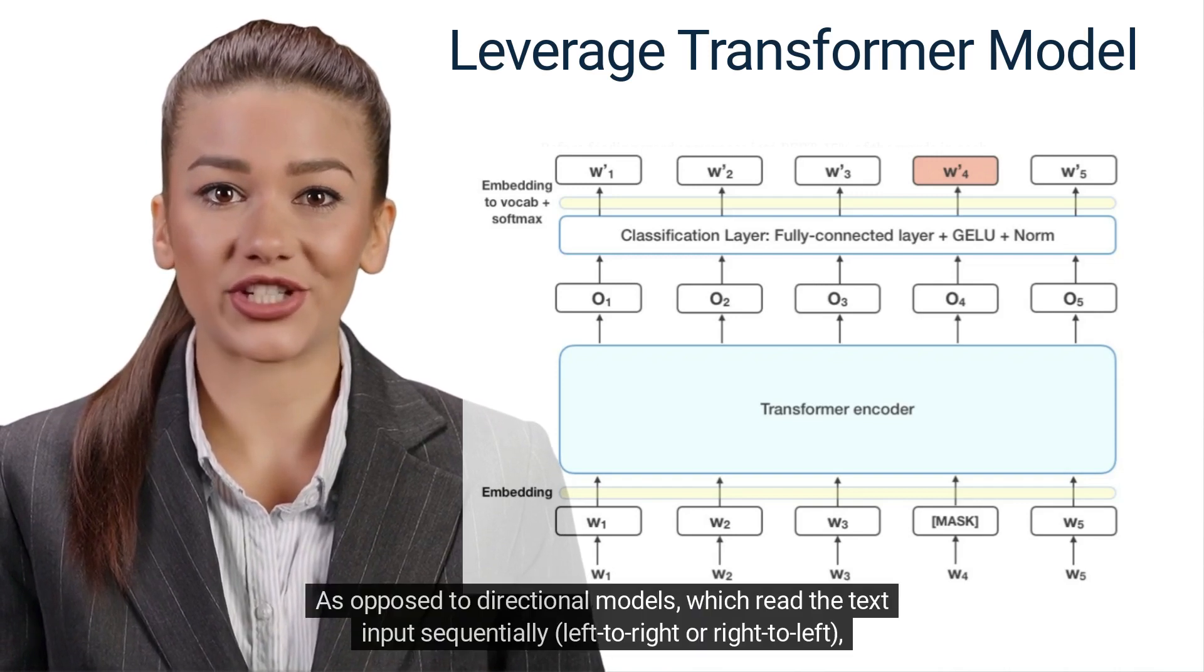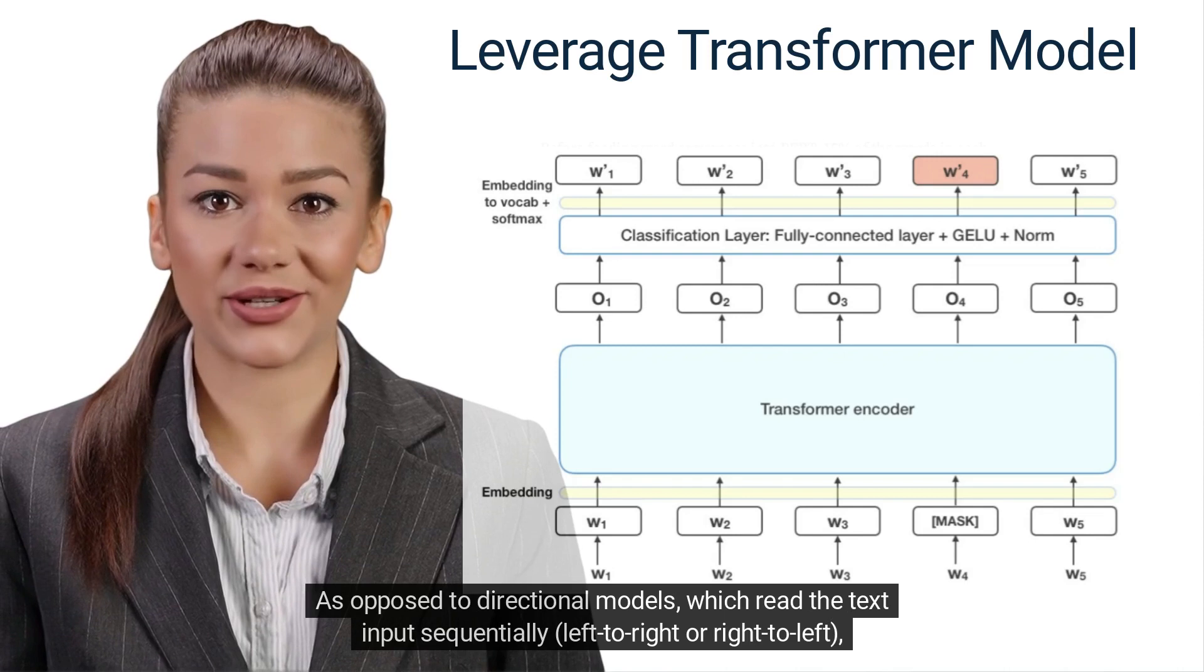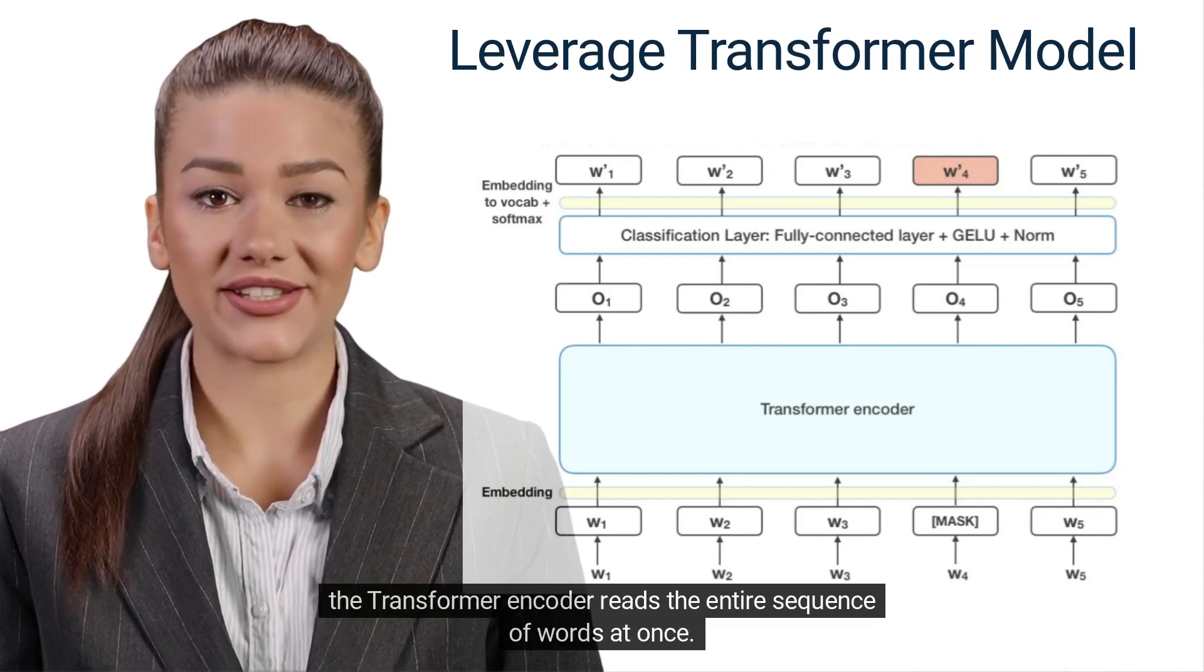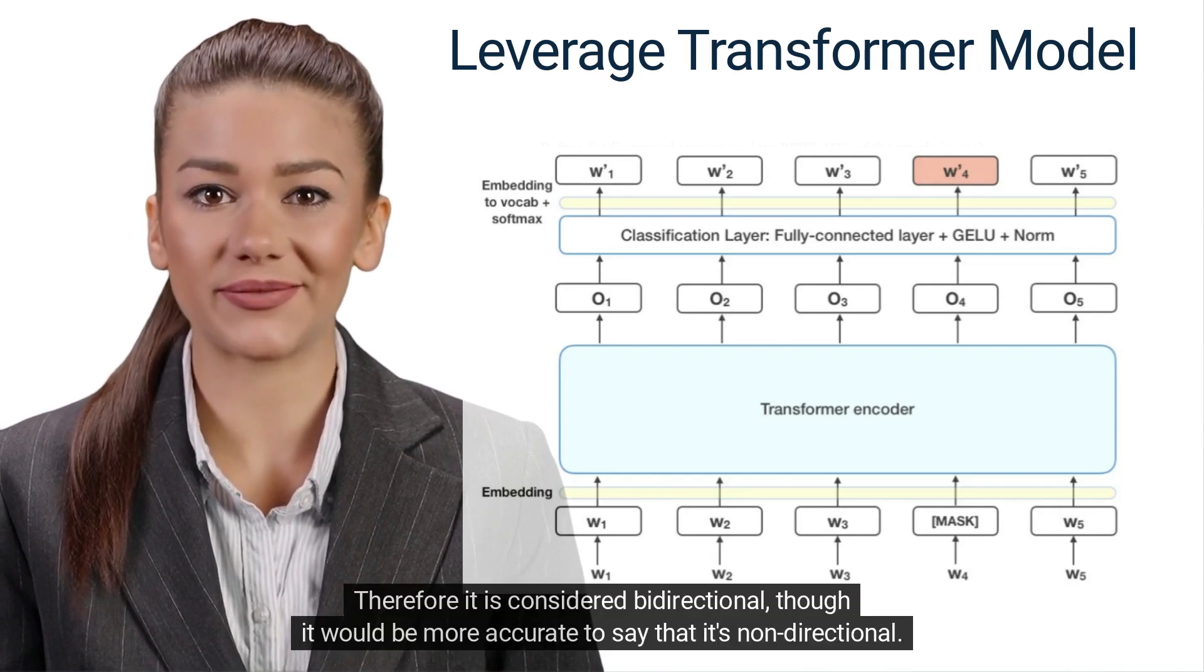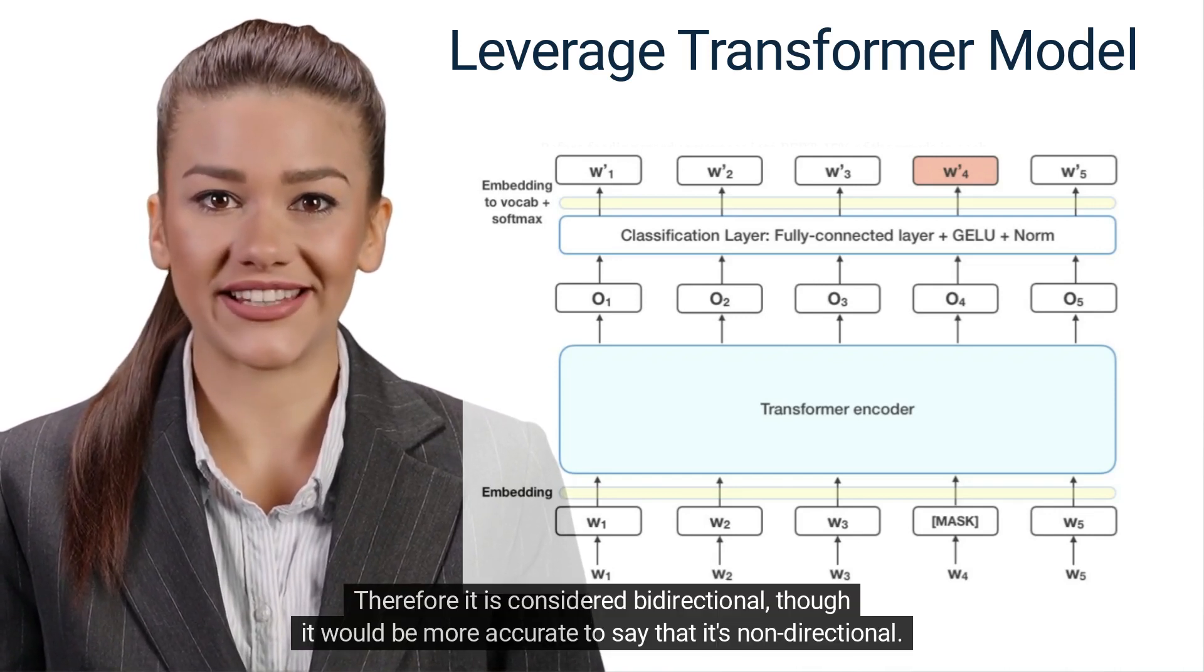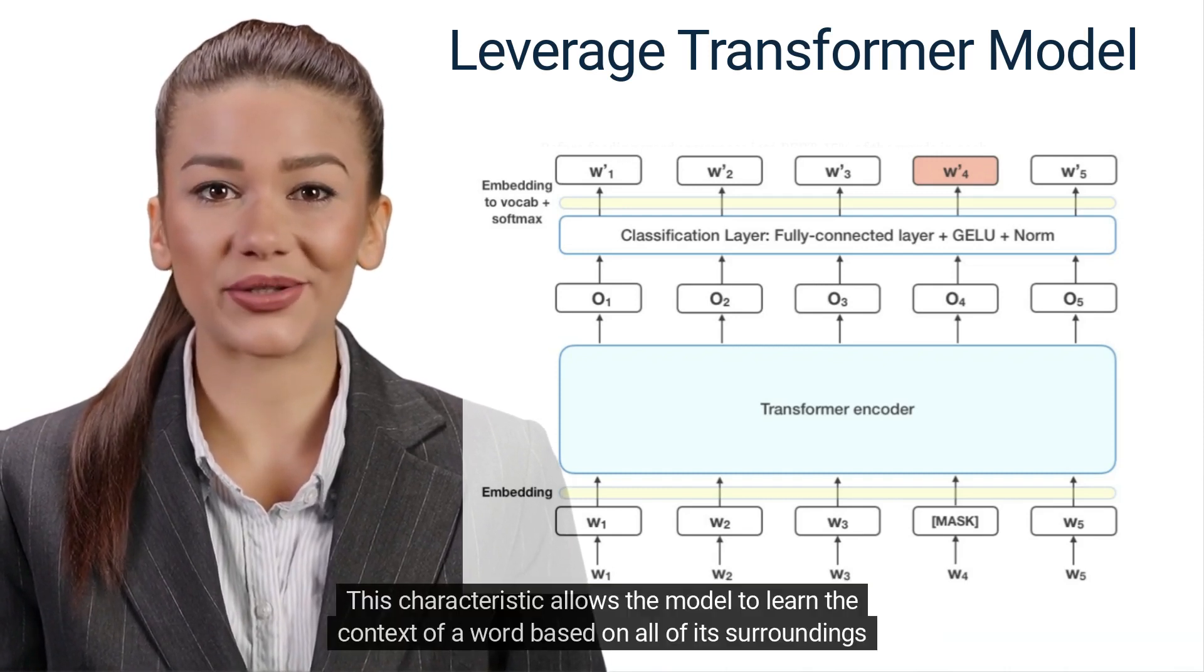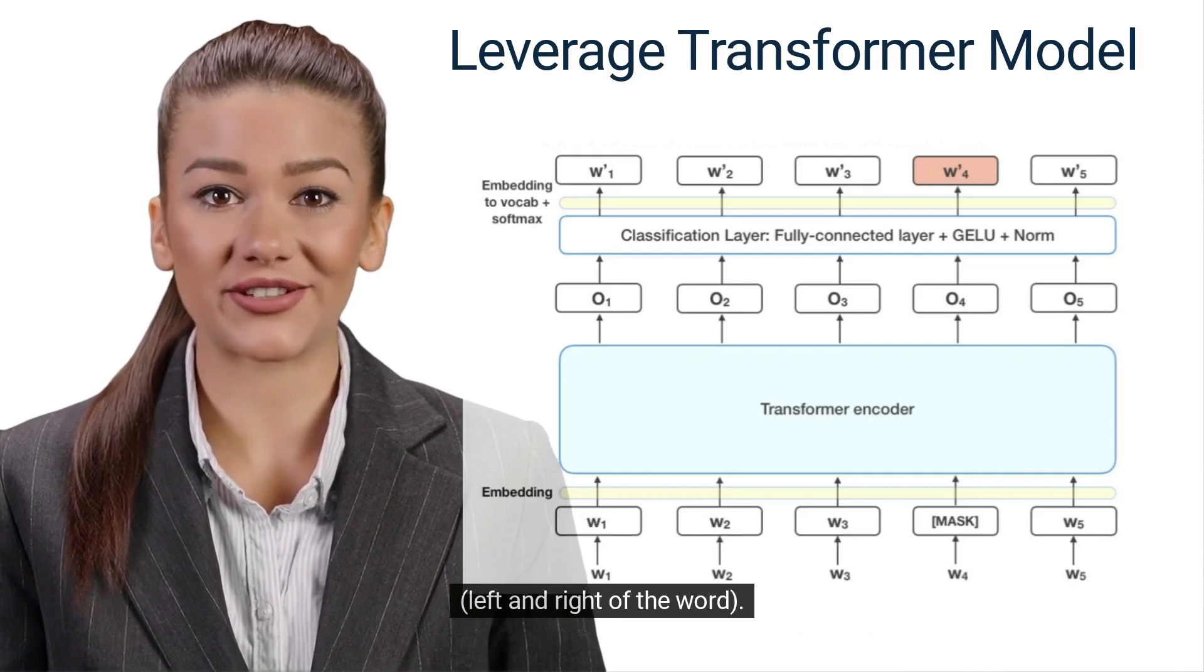As opposed to directional models, which read the text input sequentially left to right or right to left, the Transformer encoder reads the entire sequence of words at once. Therefore, it is considered bidirectional, though it would be more accurate to say that it's non-directional. This characteristic allows the model to learn the context of a word based on all of its surroundings, left and right of the word.